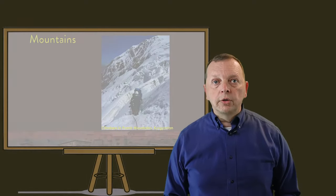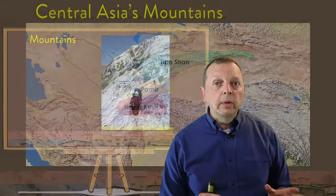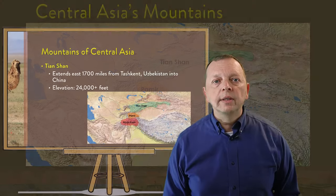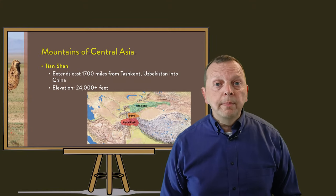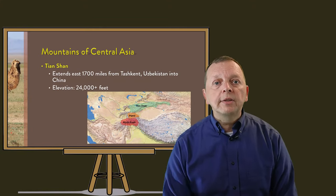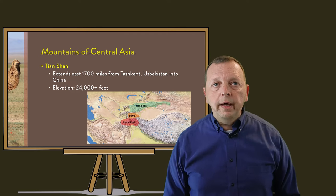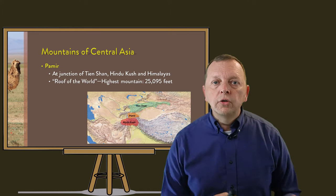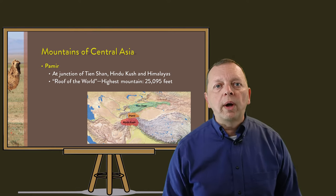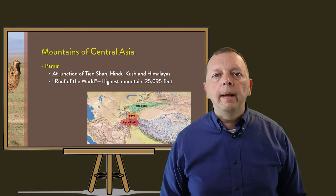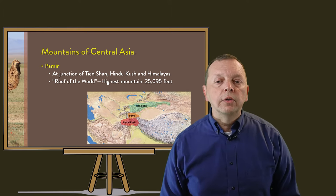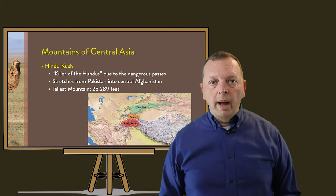Central Asia is not all steppes and deserts — there are mountains too. The Tian Shan Mountains, which literally means 'Mountains of Heaven,' begins in Kyrgyzstan and runs east for 1,700 miles. These mountains are significant because the elevations of many of their peaks actually exceed 24,000 feet. Just to the south of the Tian Shan, we find the Pamir Mountains, also known as the Roof of the World, which rise to over 25,000 feet. The Pamir Mountains are at the junction of the Himalayas, the Tian Shans, two other mountain ranges in China, and the Hindu Kush Mountains.